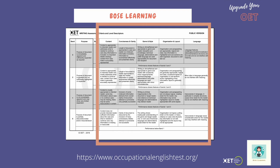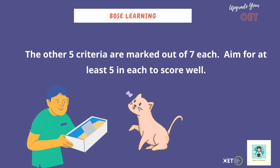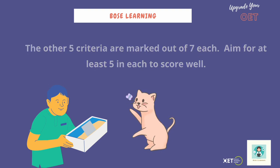Now let's look at the rest of the criteria — there are five left: content, conciseness and clarity, genre and style, organisation and layout, and language. These are scored out of seven, which is different from purpose. In order to get your B, you need to be aiming for at least five in each one. Obviously if you can score higher in some areas, it may balance out any mistakes elsewhere. But aim for around five or higher for each part.